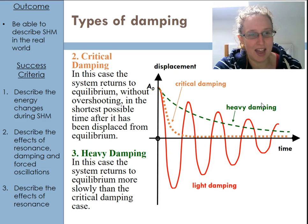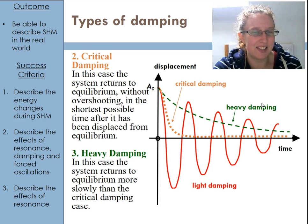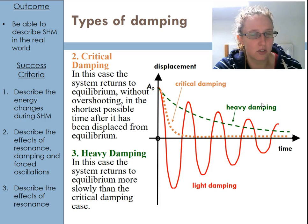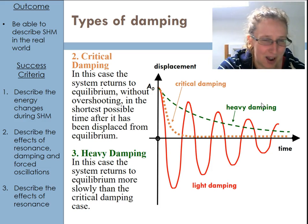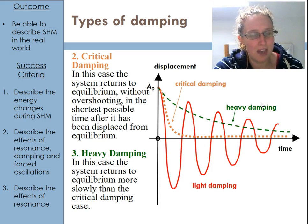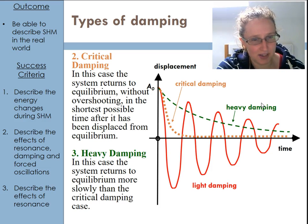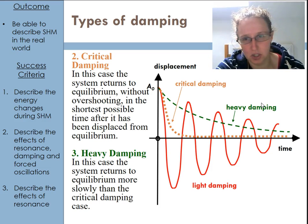Heavy damping is similar to critical damping, but it doesn't get back to equilibrium as fast. With critical damping, we return to the equilibrium position and stay there. With heavy damping, it'll take quite a while to get there, and you're more likely to see it go past the equilibrium position and come back.